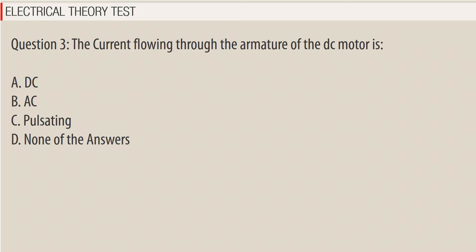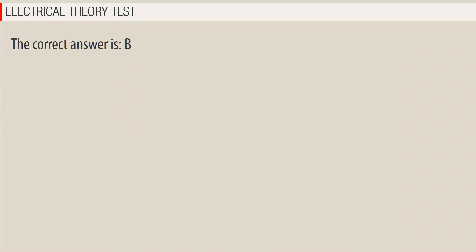Question 3: The current flowing through the armature of a DC motor is — A. DC, B. AC, C. Pulsating, D. None of the answers. The correct answer is B.